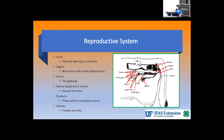The cow's reproductive tract is located in the pelvic and abdominal cavity. Thorough knowledge of structures of the female reproductive system is essential for successful palpation. Some of these terms include: the vulva, which is the external opening or entrance; the vagina, which is the birth canal and semen deposit area; the cervix, which is the gateway; the uterus, which has a body and two horns and houses the fetus; the oviducts, which are the tubes where conception occurs; and the ovaries, which are referred to as the female sex cells.